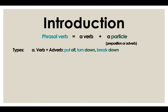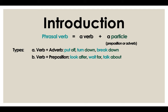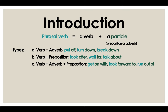Type A: verb plus adverb — put off, turn down, break down. Type B: verb plus preposition — look after, wait for, talk about. Type C: verb plus adverb plus preposition — get on with, look forward to, run out of.